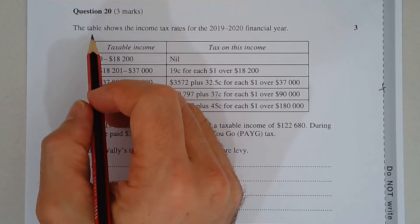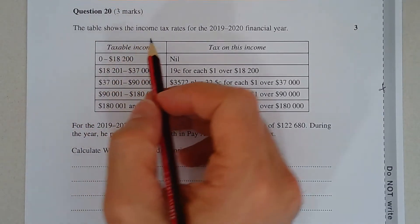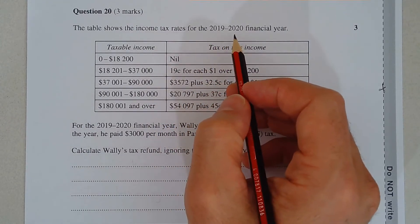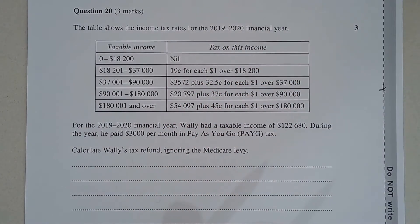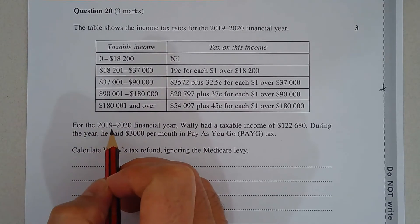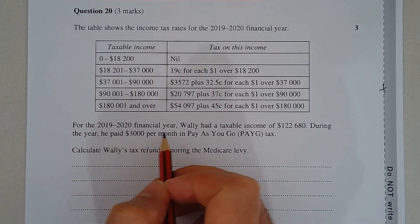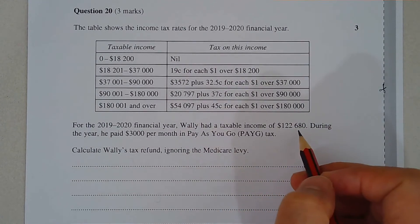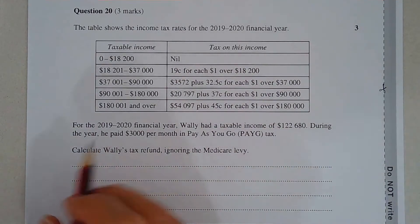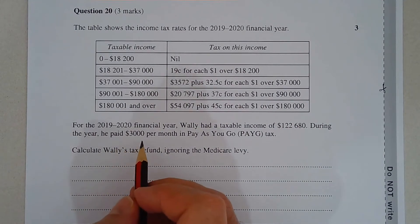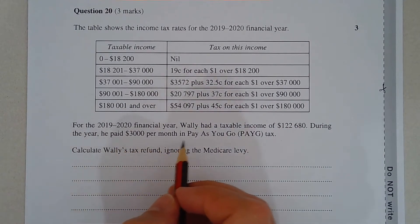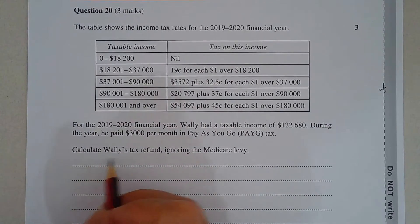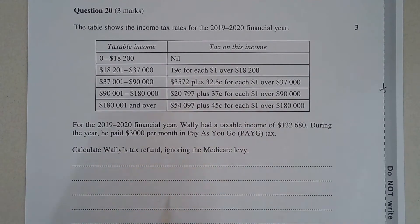Question 20. The table shows the income tax rates for the 2019-2020 financial year. For the 2019-2020 financial year, Wally had a taxable income of $122,680. During the year, he paid $3,000 per month in pay-as-you-go (PAYG) tax. Calculate Wally's tax refund, ignoring the Medicare levy.